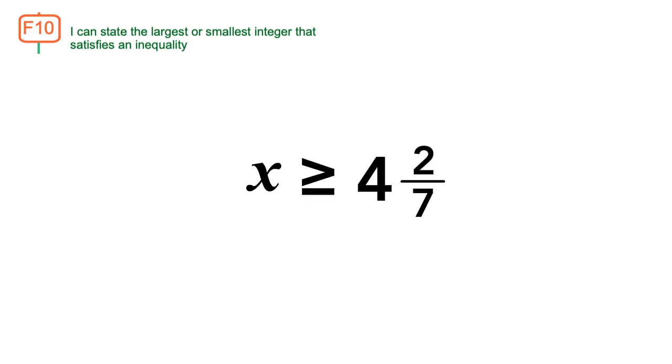As you can see, we have 4 wholes. 4 is the smallest integer that satisfies the inequality.